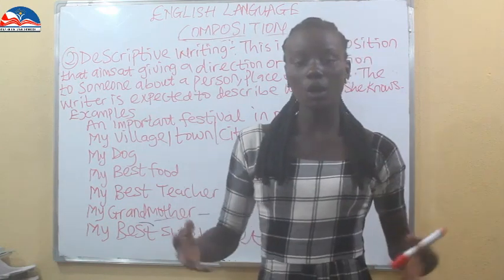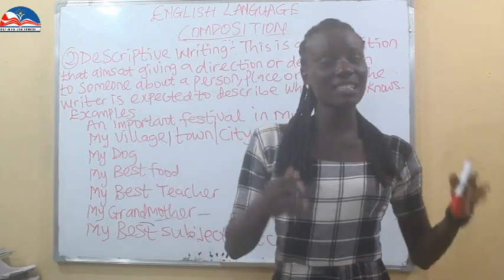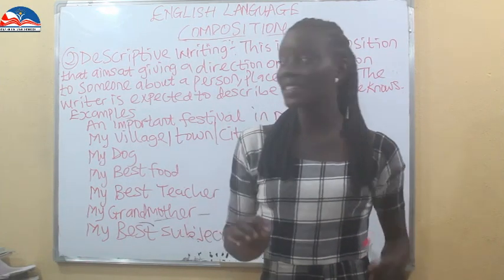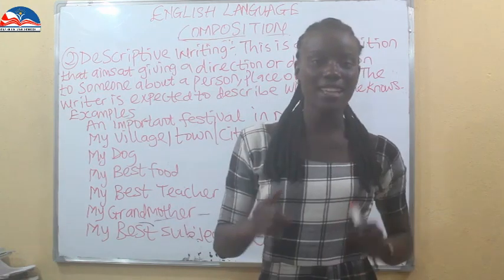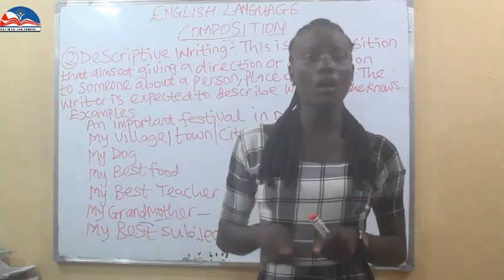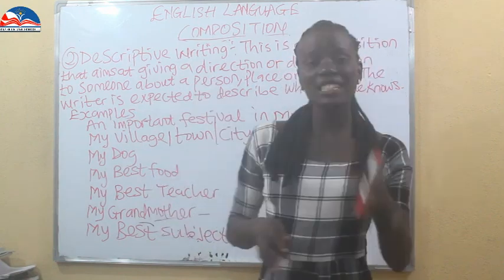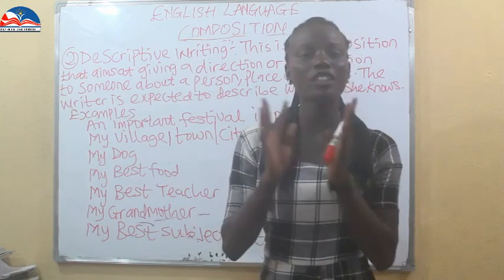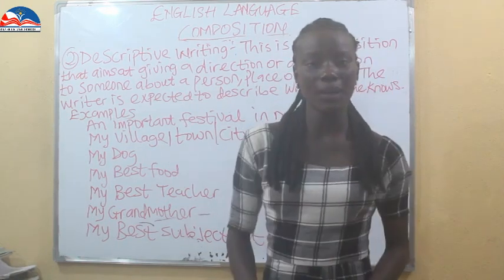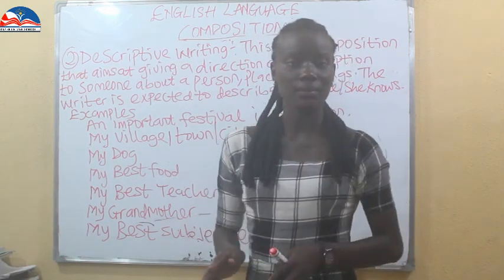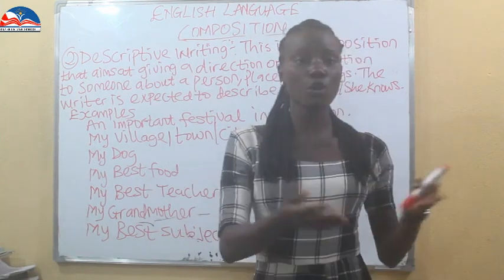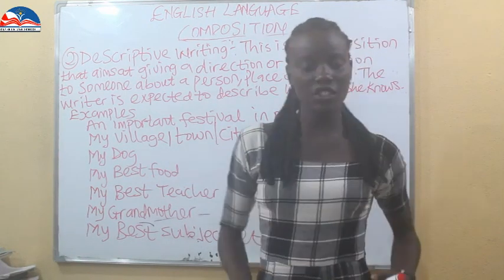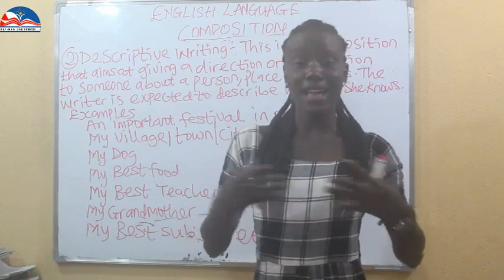To summarize: narrative essay deals with narrating a particular story or event — how it happened or occurred. But descriptive writing deals with giving direction or description about a person, a place, or a thing. Examples of what you could describe include: grandmother, dog, your village, best teacher, your best subject, your best food, etc.